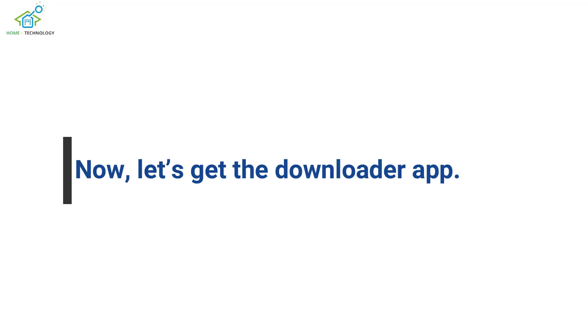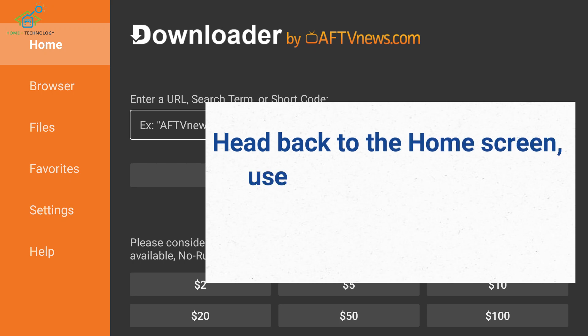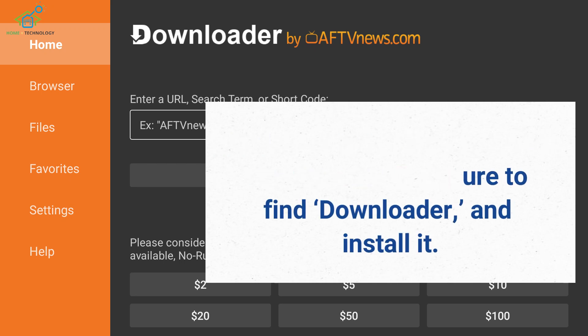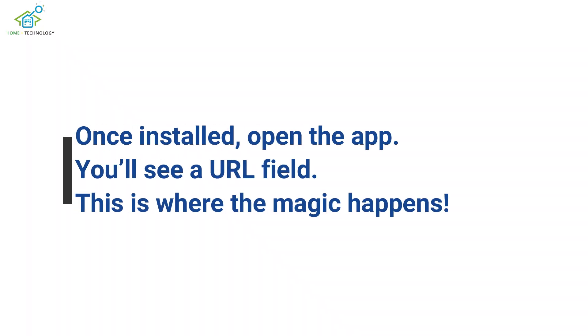Now, let's get the Downloader app. Head back to the home screen, use the search feature to find Downloader, and install it. Once installed, open the app.